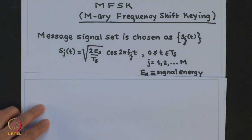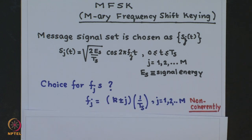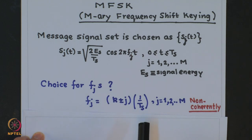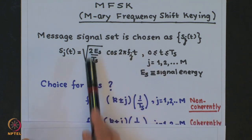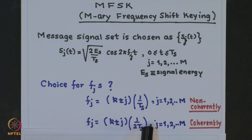The choice of f_j can be done in two ways. One, we can choose the difference between two adjacent f_j as 1/T_s — this is known as non-coherently orthogonal. Another choice to make this signal set orthogonal is to choose f_j such that the difference between adjacent frequencies is 1/(2T_s), which implies that it is coherently orthogonal.